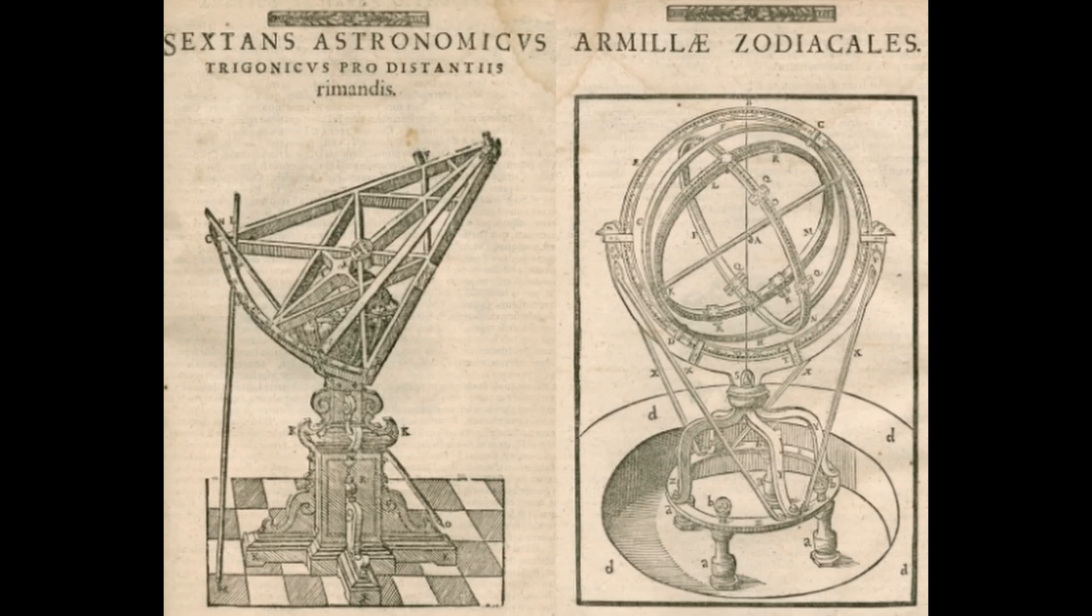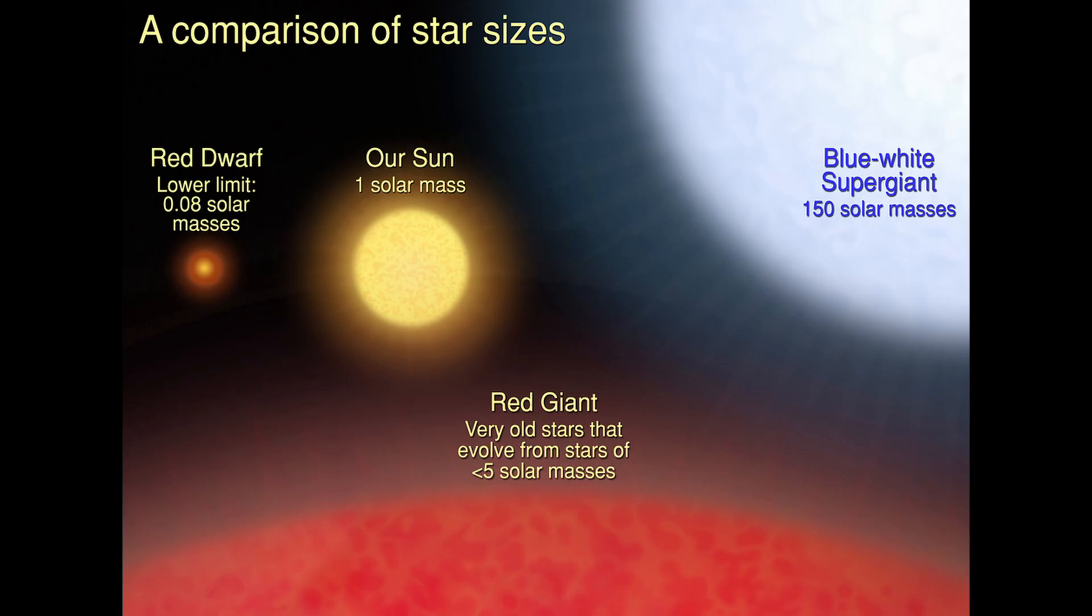Despite his improvements to observational tools, Tycho was unable to detect any measurable parallax for stars, leading him to conclude one of two things. Either the Earth didn't move, or the stars were unimaginably distant and incredibly large.